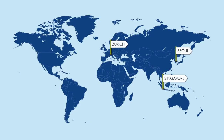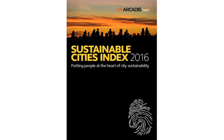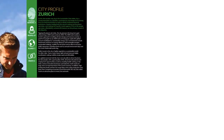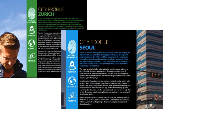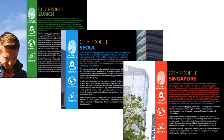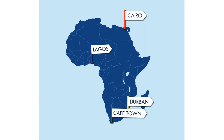To give you examples from global cities, you'll see Zurich, Seoul and Singapore from the Arcadis Report on Sustainable Cities Index, which ranks cities based on how well they perform in the categories of people, planet and profit. Zurich ranks first in the planet category, Seoul ranks first in the people category, and Singapore ranks first in the profit category. And for examples from African cities, there's Cairo, Cape Town, Durban and Lagos.